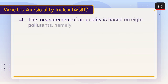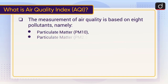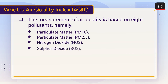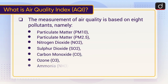The measurement of air quality is based on eight pollutants, namely: Particulate Matter PM10, Particulate Matter PM2.5, Nitrogen Dioxide (NO2), Sulfur Dioxide (SO2), Carbon Monoxide (CO), Ozone (O3), Ammonia (NH3), and Lead (Pb).